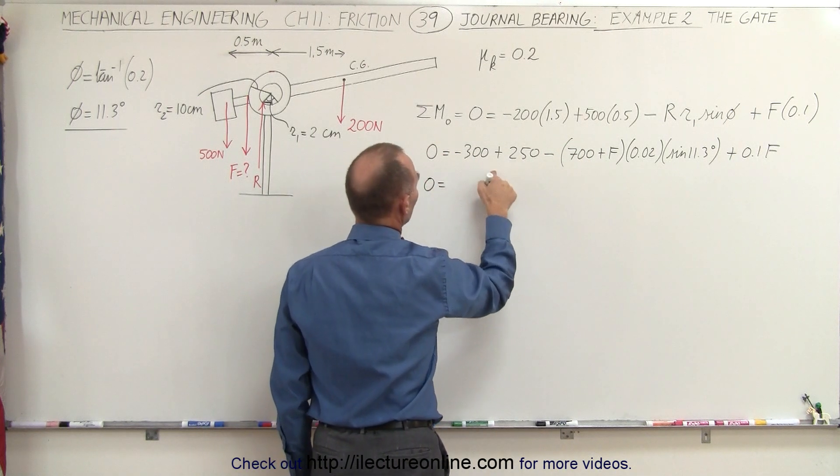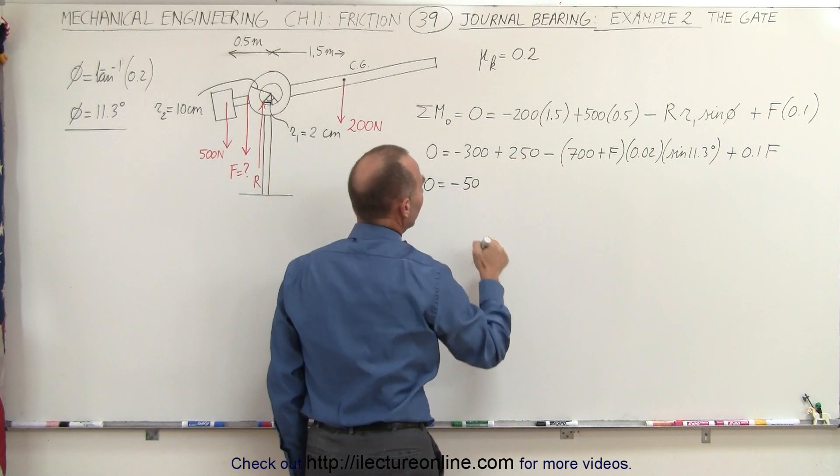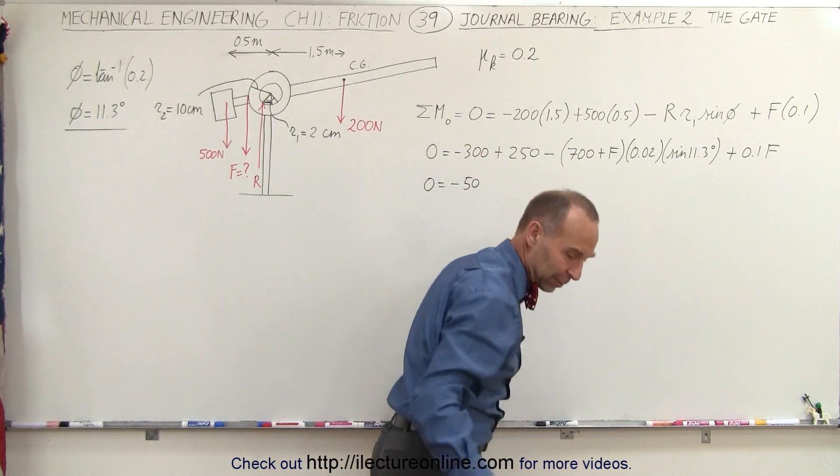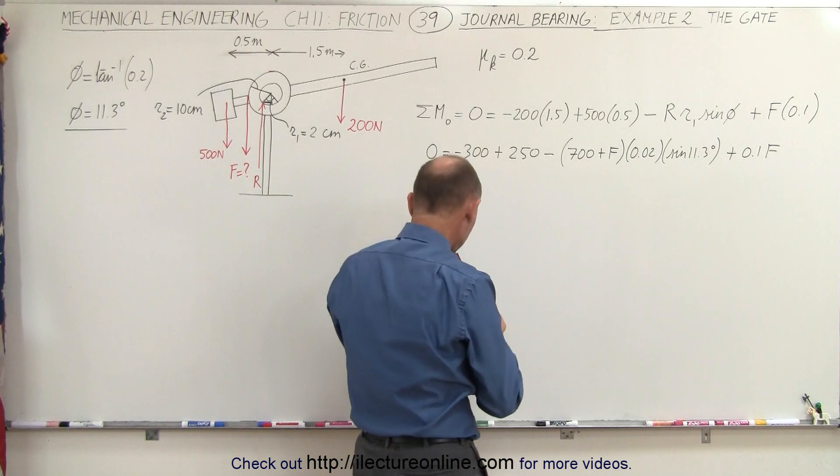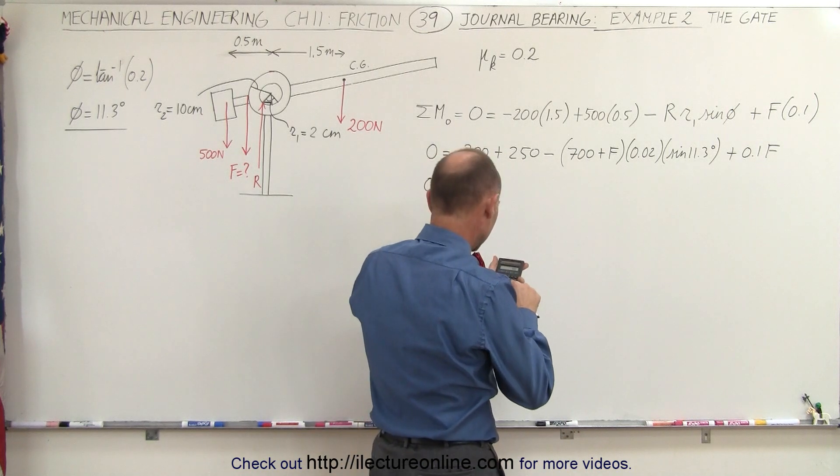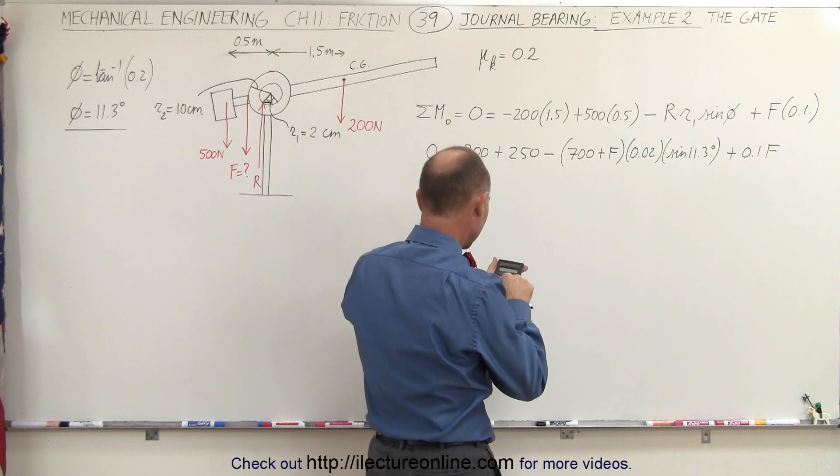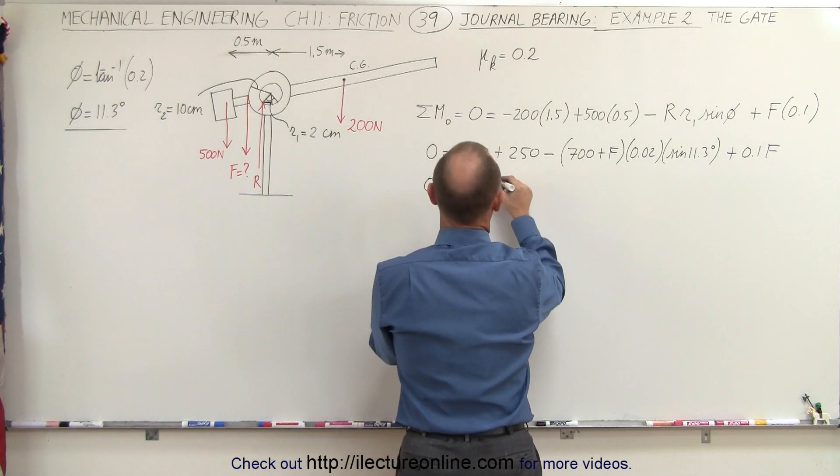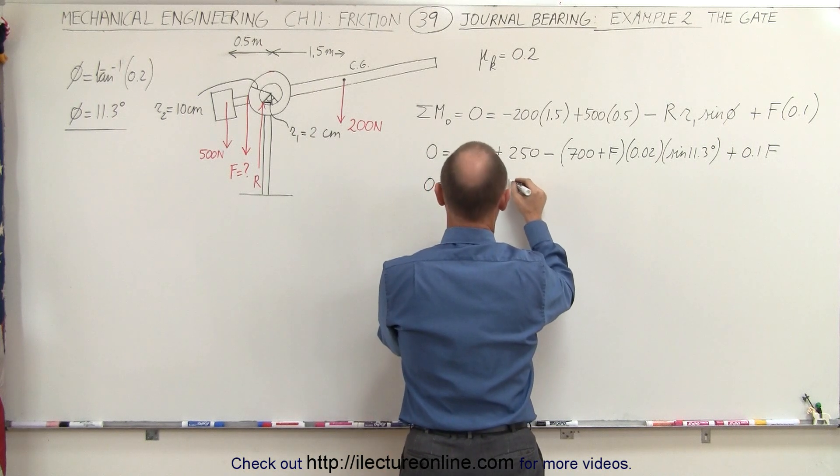So 0 is equal to minus 50, and minus 700 times this times this. Let's see what that is equal to. 700 times 0.02 times sine of 11.3 degrees equals minus 2.74.